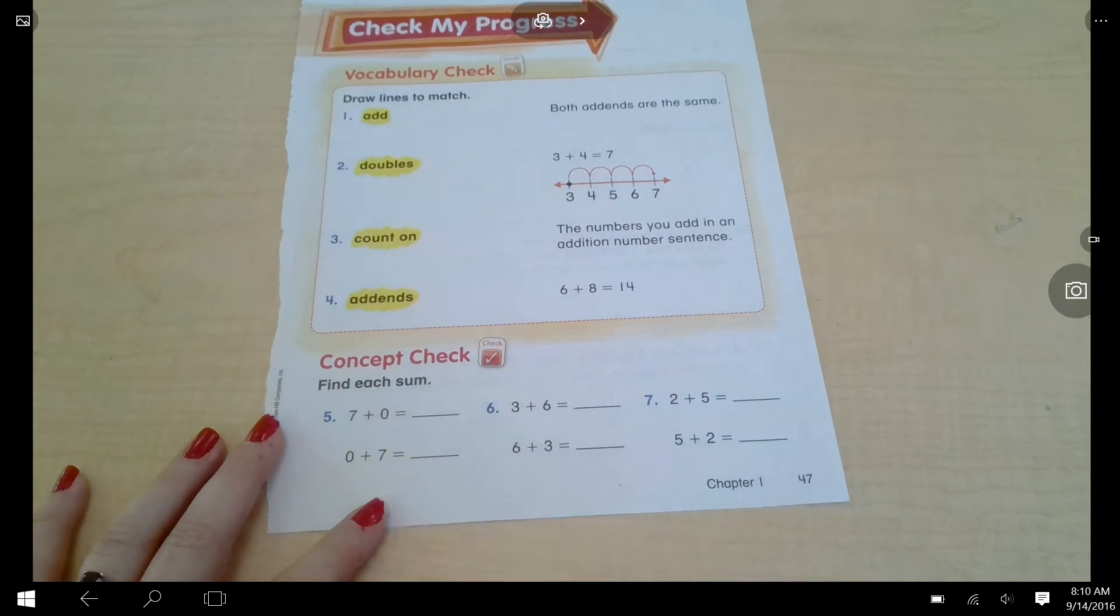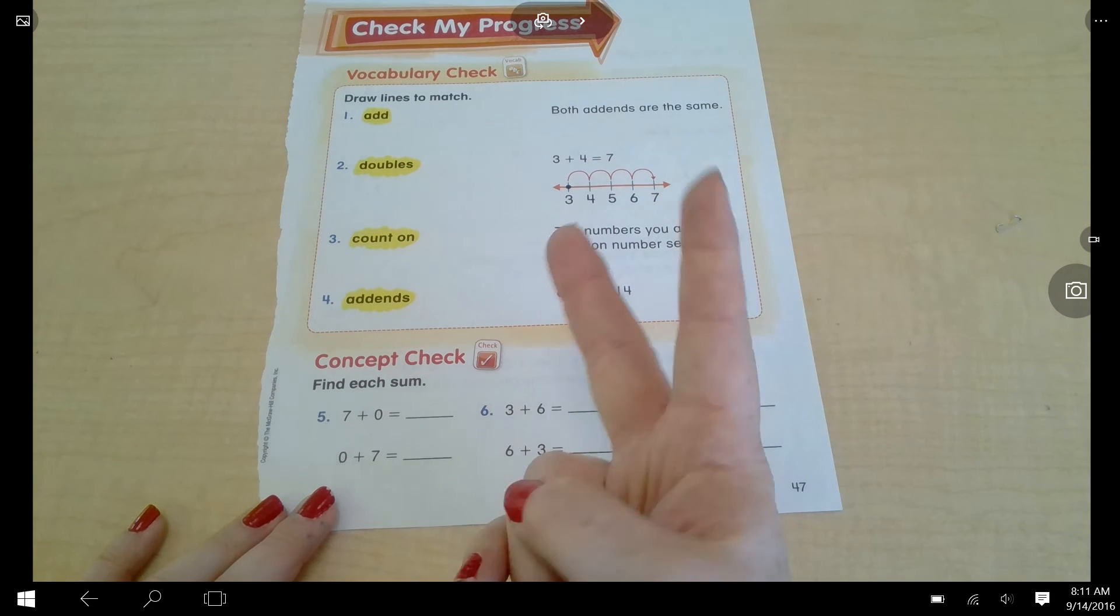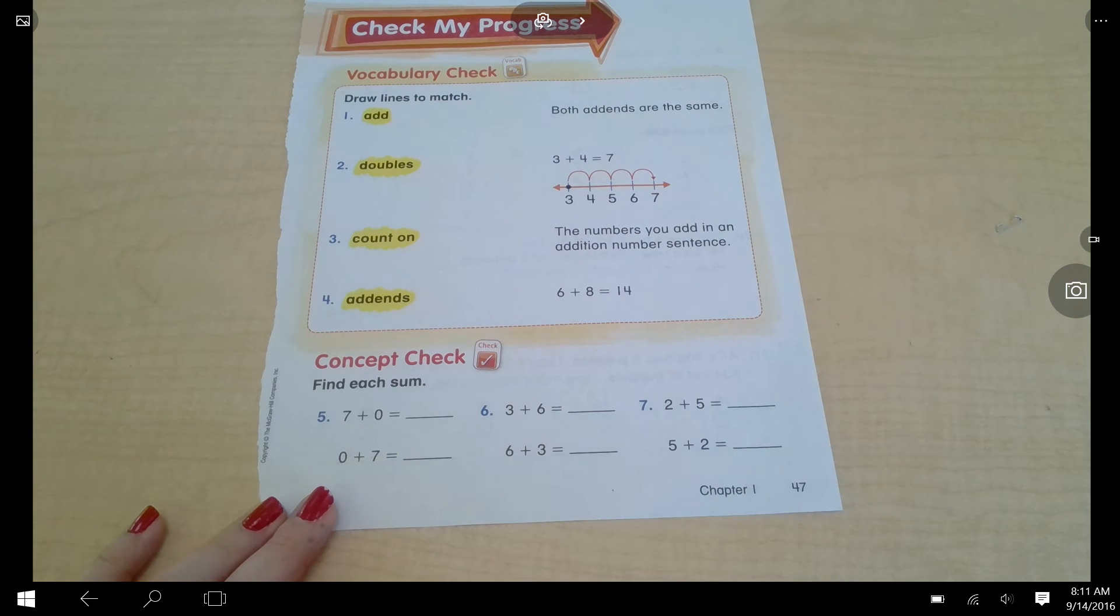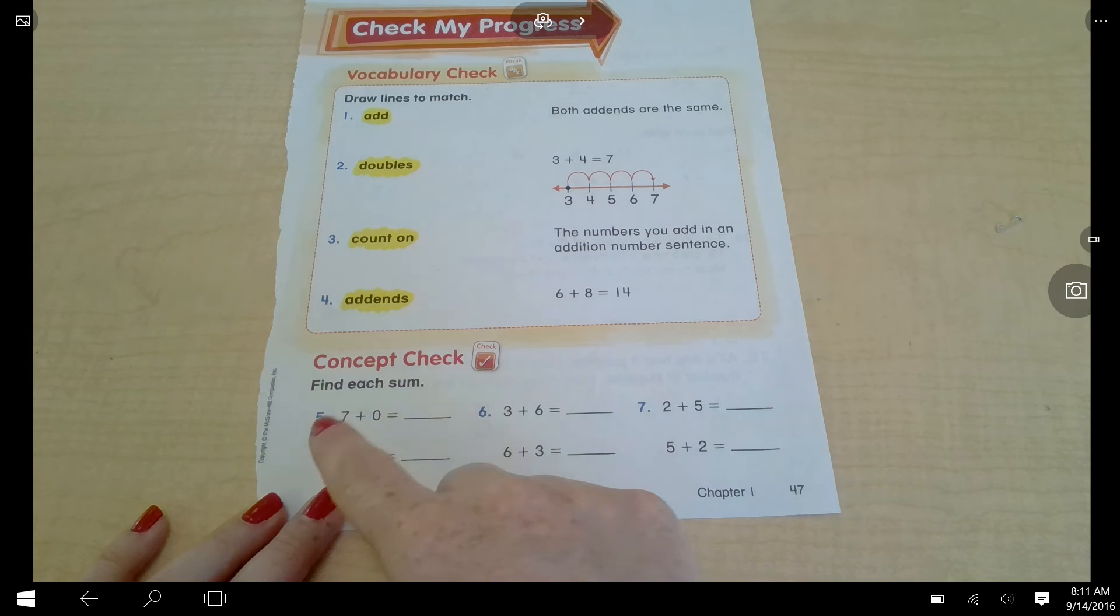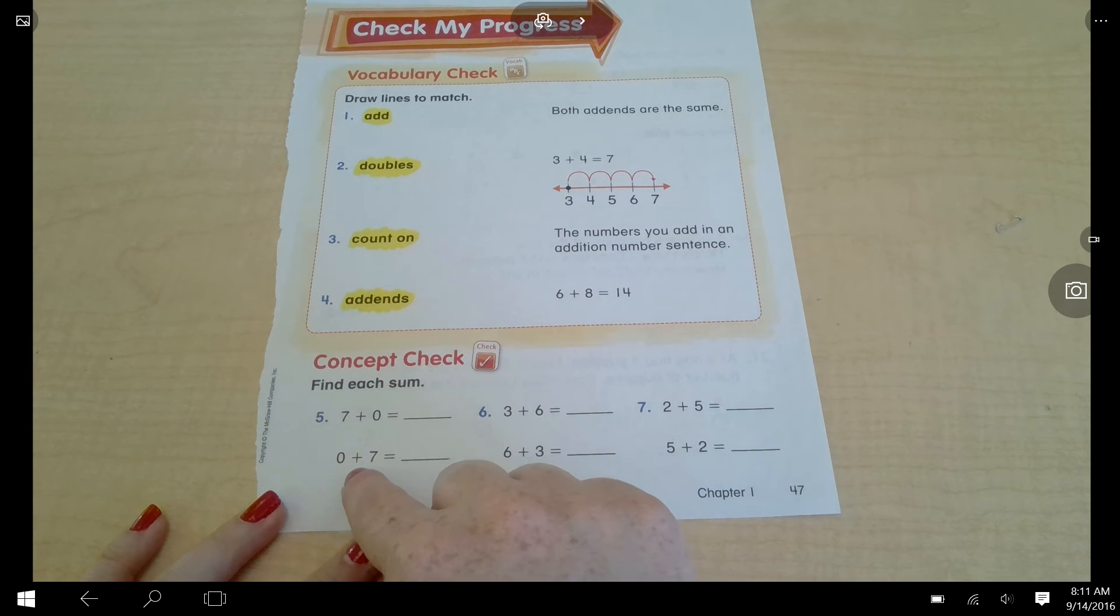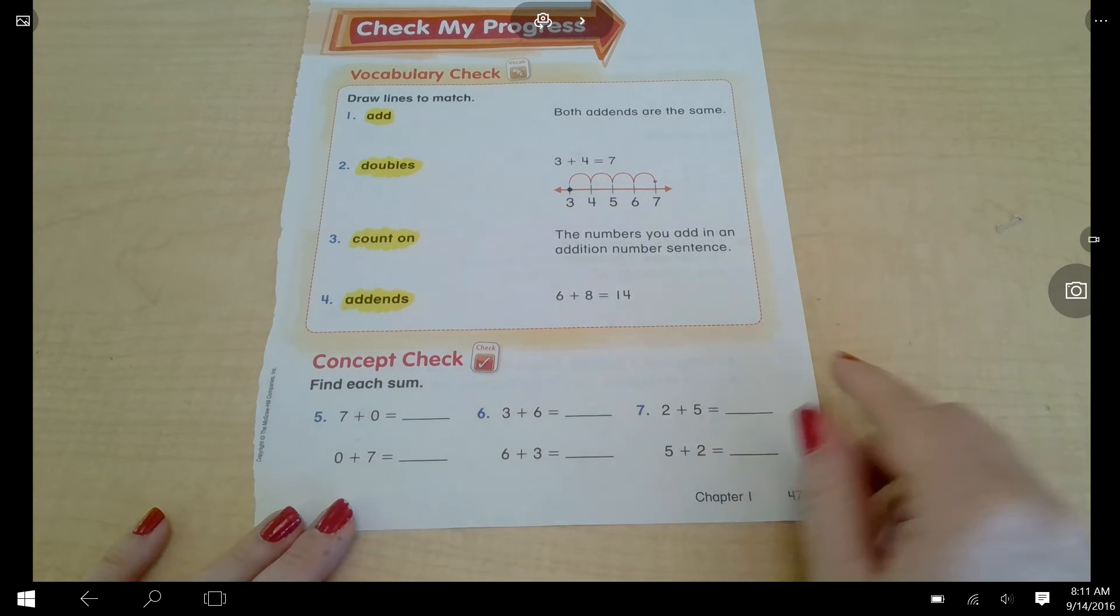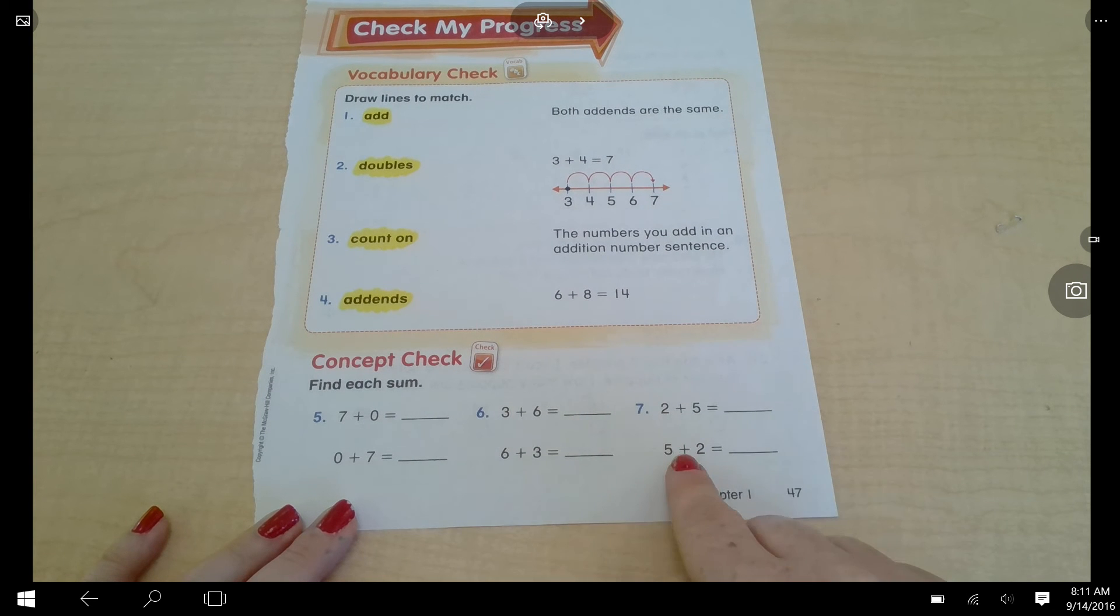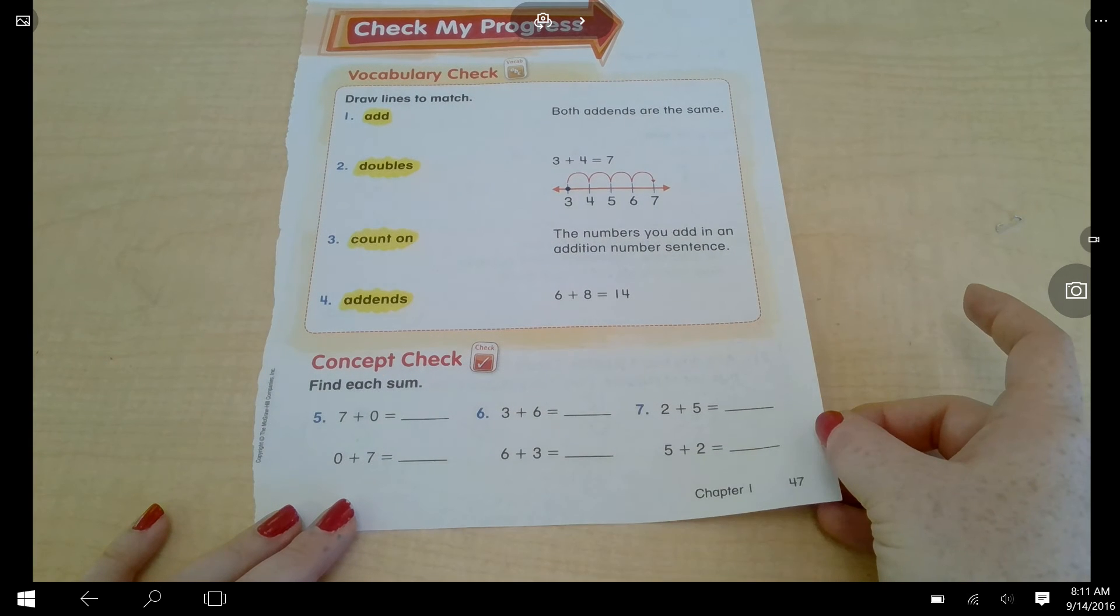Now let's look at the concept check. At the bottom of page 47, there are three math problems for you. It is showing you the concept of adding. That means you can switch the addends and get the same sum. Go ahead and solve number five, number six, number seven. Number five says seven plus zero equals, zero plus seven equals. Number six says three plus six equals, six plus three equals. Number seven says two plus five equals, five plus two equals. Put your sum on the blank line. Pause the video, do that now.